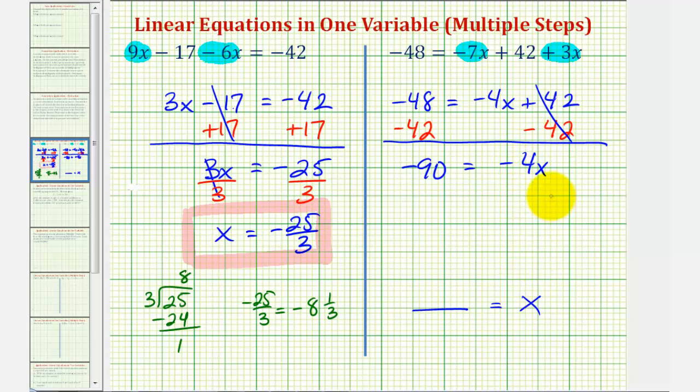We need to be a little careful here. On the right side, negative four x means negative four times x, and therefore, to isolate x, we want to divide both sides by negative four. On the left side, a negative divided by a negative is positive, so we have positive 90 fourths equals x.